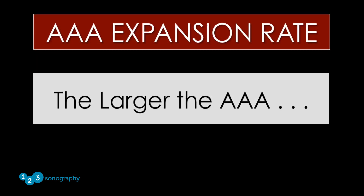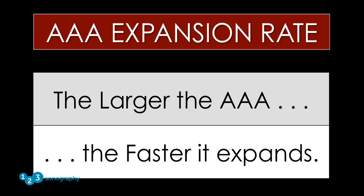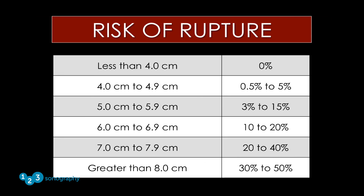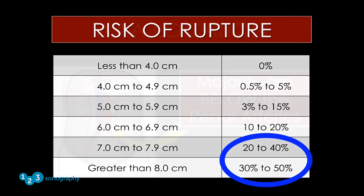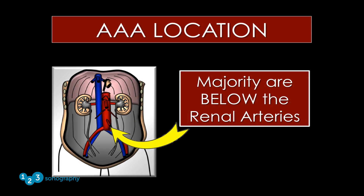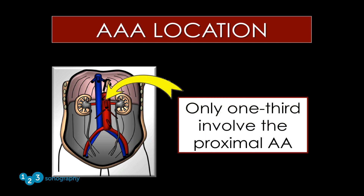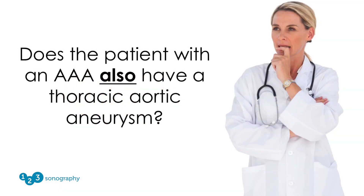Always remember that the larger the abdominal aortic aneurysm, the faster it expands over time, and the higher the risk of rupture. The majority of aneurysms involve the distal segment at or near the bifurcation of the common iliac arteries. Approximately one in three aneurysms involve both the distal and proximal abdominal aorta, and in that case the examiner should be very suspicious that the aneurysm extends into the thorax.